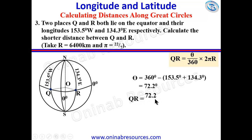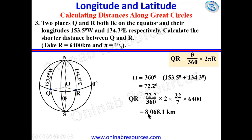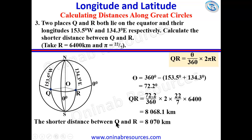We then calculate: QR = (72.2 / 360) × 2 × (22/7) × 6400 = 8068.1 kilometers, which to three significant figures is 8070 kilometers. This represents the shorter distance between Q and R.